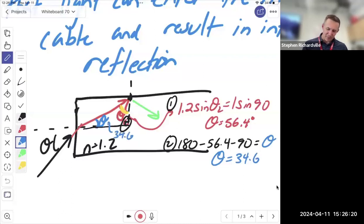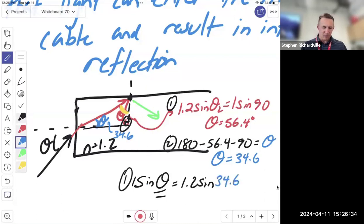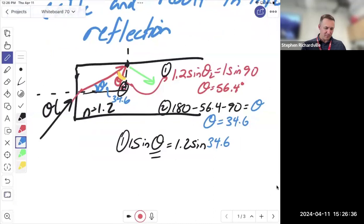So if that's 34.6, I'm ready to be done. Because now my third step is to go ahead and solve one sine theta I'm looking for equals 1.2 sine 34.6. And now, when I do that, I get, let's see, what do I get? Wait for it, 42.95, about 43 degrees.